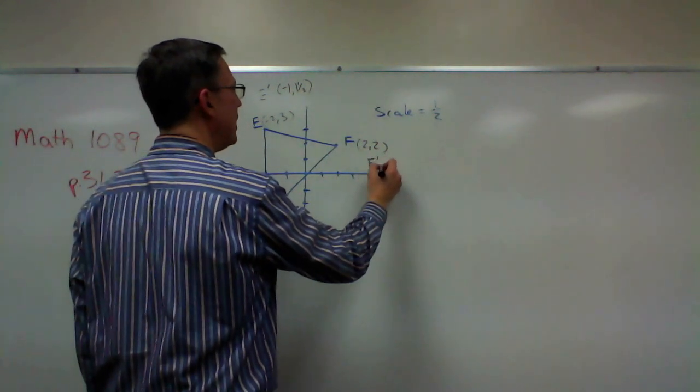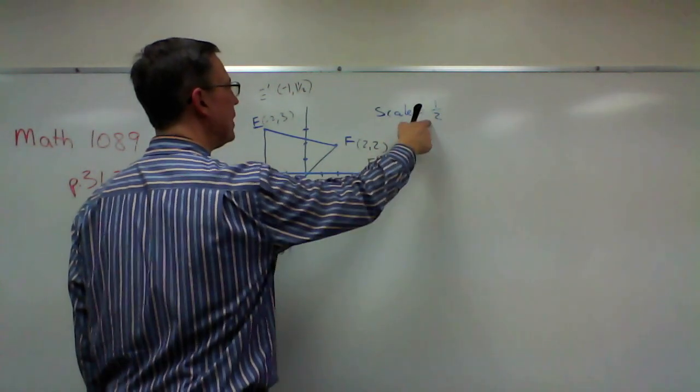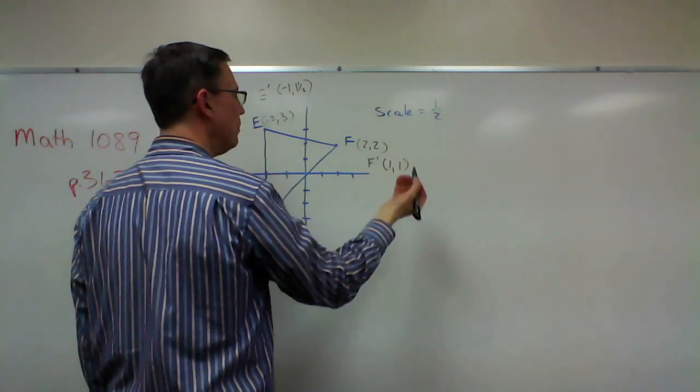This one, F prime, is going to be two times one half is one. Same here, so one, one.